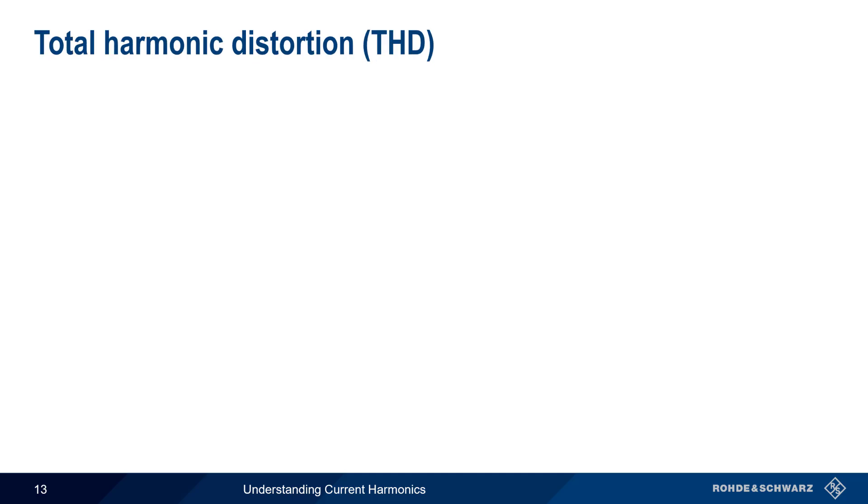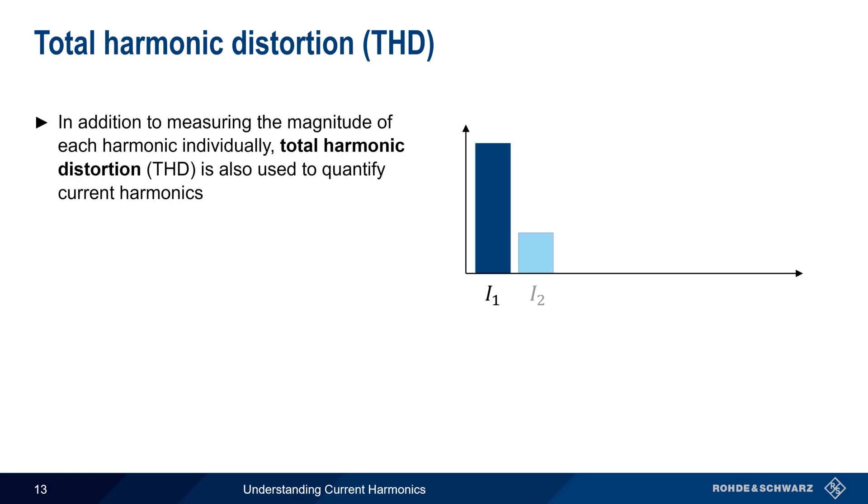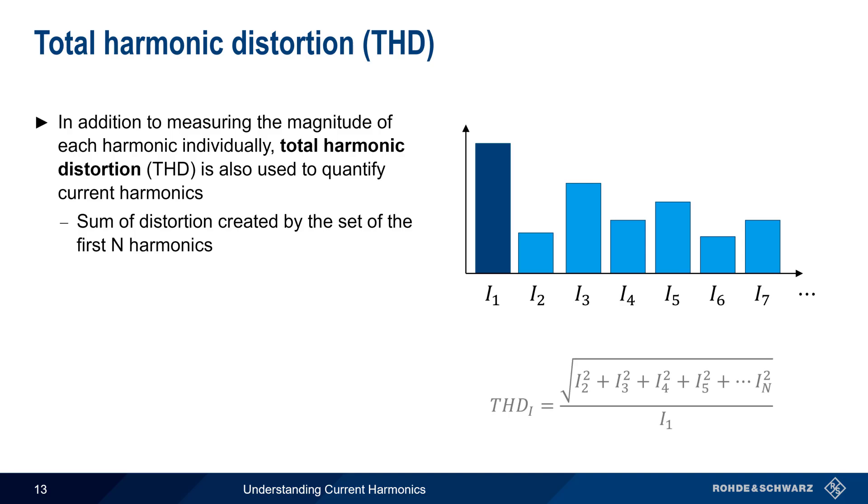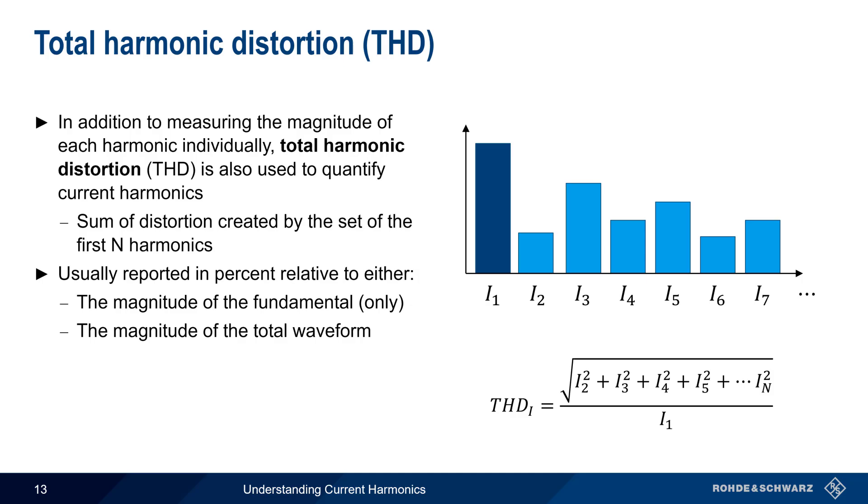Now let's come back to the topic of measuring harmonics. In addition to measuring the magnitude of each harmonic individually, total harmonic distortion is another very common measurement. As the name implies, total harmonic distortion measures the sum of distortion created by a set of n harmonics. It's usually reported as a percent value relative to either the magnitude of the fundamental or relative to the magnitude of the entire current waveform. Higher values for total harmonic distortion indicate greater waveform distortion, that is, a greater number of measurable harmonics, and or higher amplitudes for the individual harmonics.